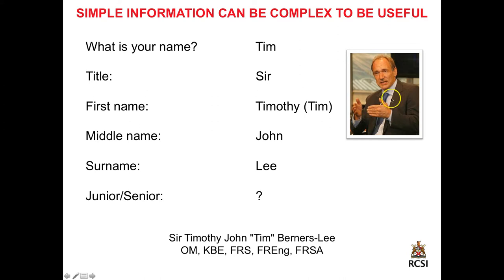Here's my example: Tim Berners-Lee, the man credited with the invention of the World Wide Web. If he came to your surgery having fallen off his bicycle and broken his clavicle, and you asked his name, he might say 'Tim.' But let's look at his Wikipedia title: he is Sir Timothy John — Tim likes to be known as — Berners-Lee, followed by OMK, BE, FRS, FRENG, FRSA. He is a Knight of the British Empire, hence Sir Tim. But his actual name is Timothy, not Tim — that's a truncation.